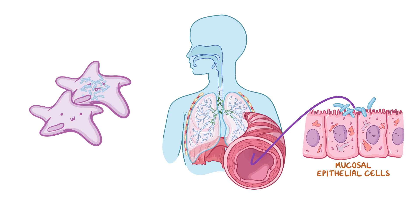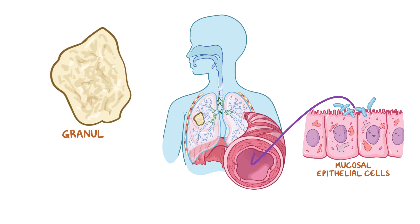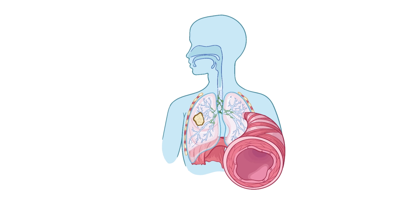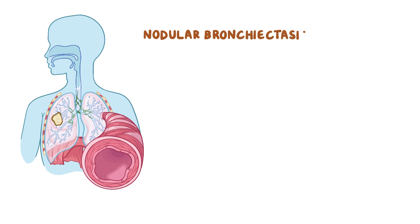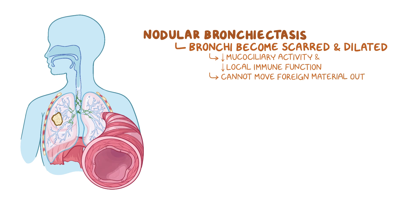When these mycobacteria multiply, they can cause inflammation, and this attracts more macrophages to the area. They try to quarantine the invaders by forming granulomas, and as these grow bigger, they form nodules. Eventually, this leads to nodular bronchiectasis, and the inflammation causes damage to the bronchi, which becomes scarred and dilated. The damaged bronchi have diminished mucociliary activity as well as decreased local immune function, and thereby lose their ability to move foreign material out of the lungs, so mucus can collect in these dilated areas, making it the perfect environment for bacterial growth.